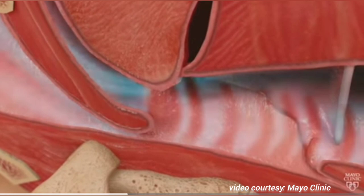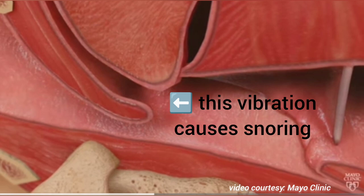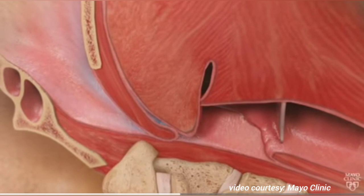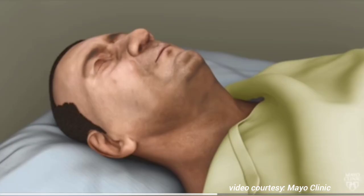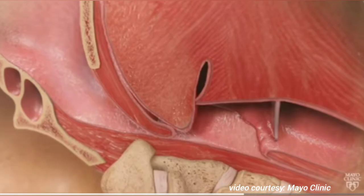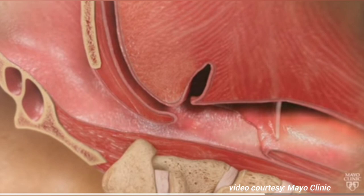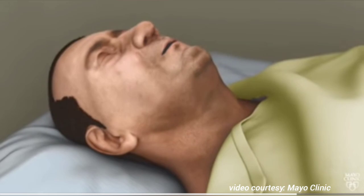That causes snoring, which many people experience. But in some people, the throat closes so much that enough air can't get through to the lungs. When this happens, the brain sends an alarm to open the airway. This is associated with a brief arousal from sleep. The brain quickly reactivates the muscles that hold the throat open. Air gets through again and the brain goes back to sleep. This disorder is called obstructive sleep apnea.